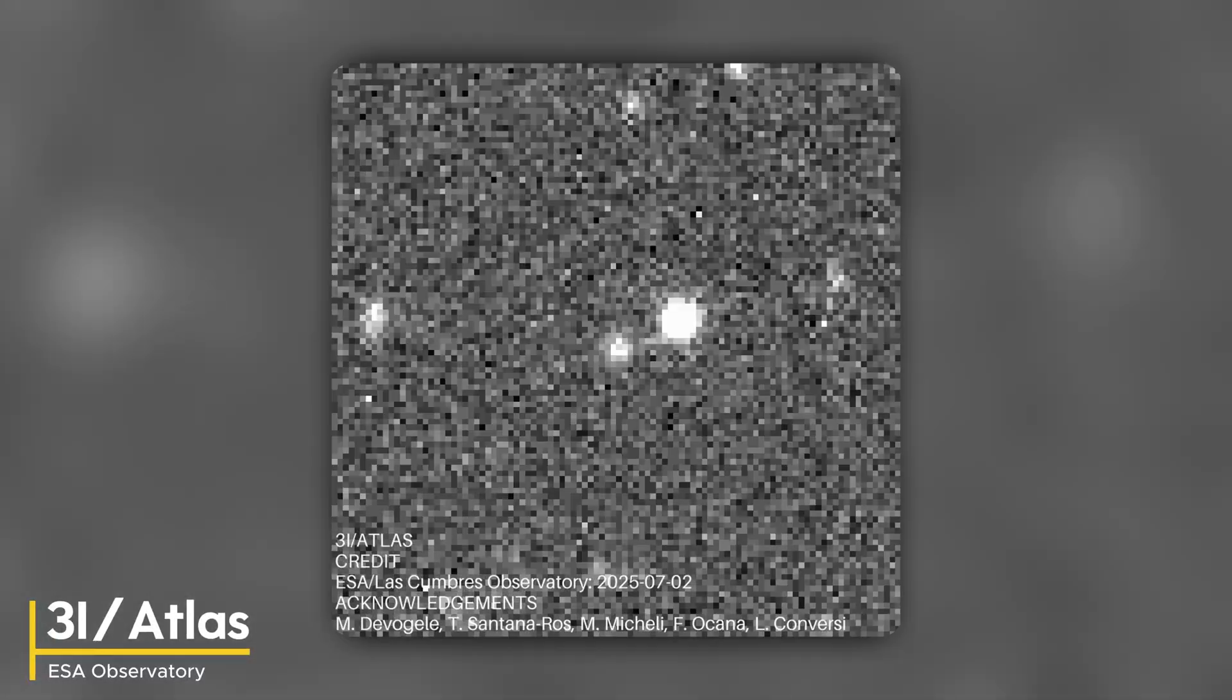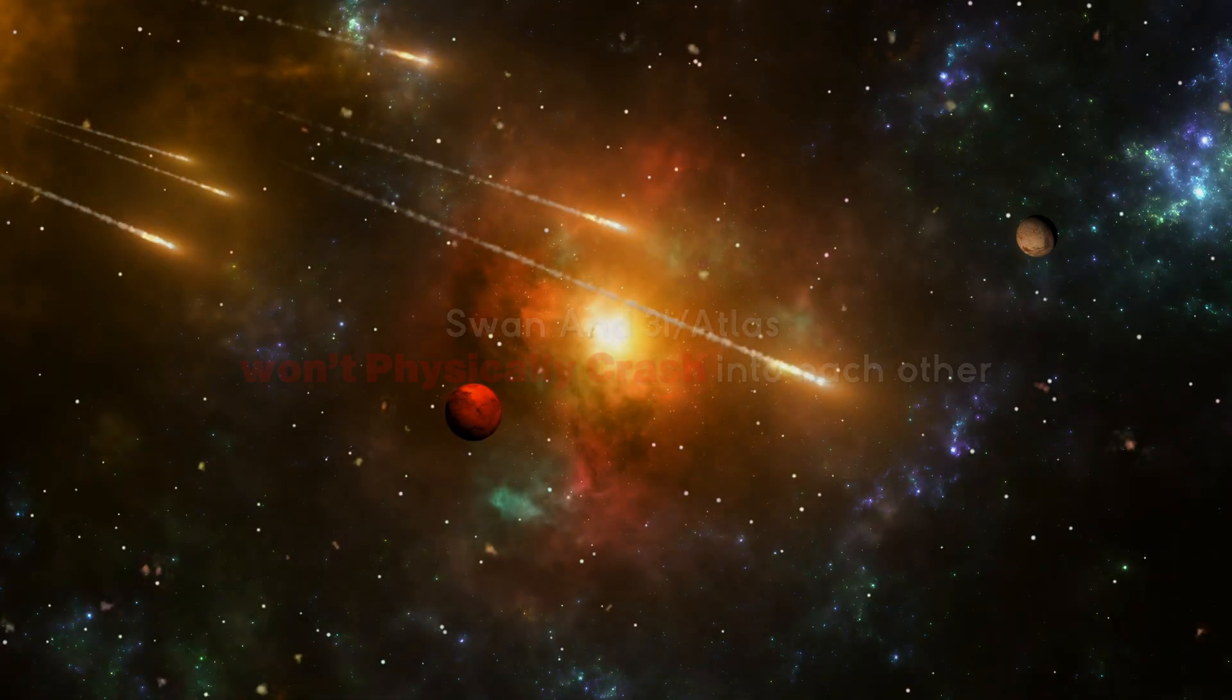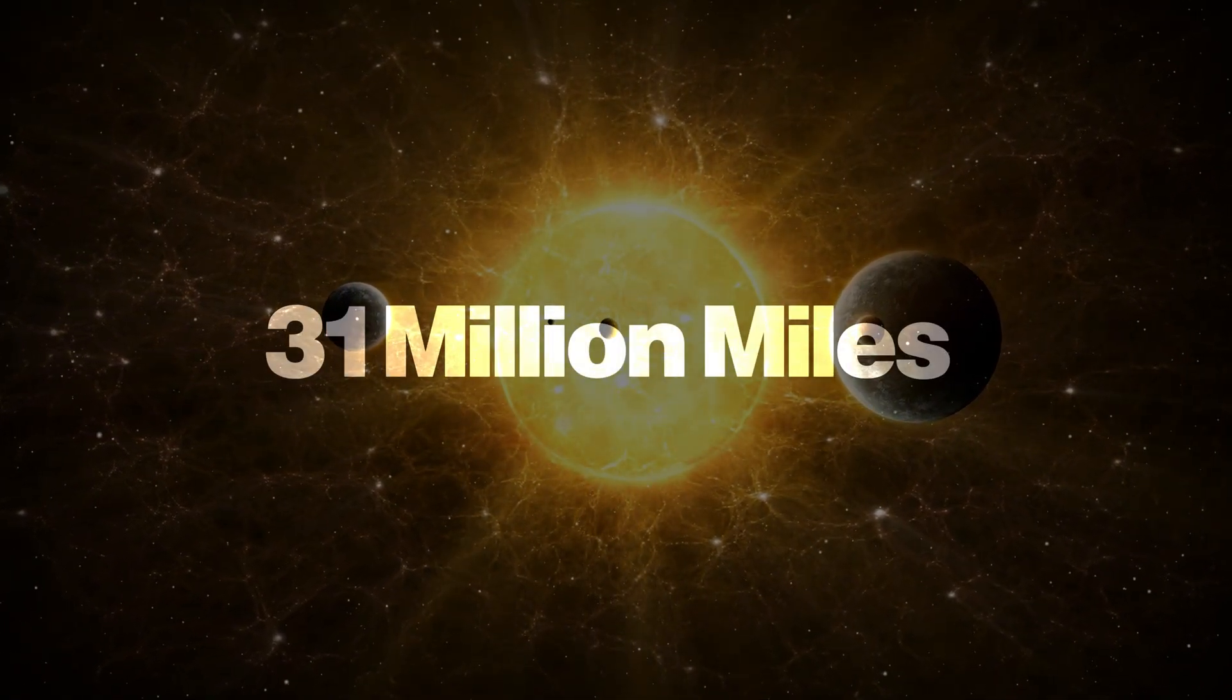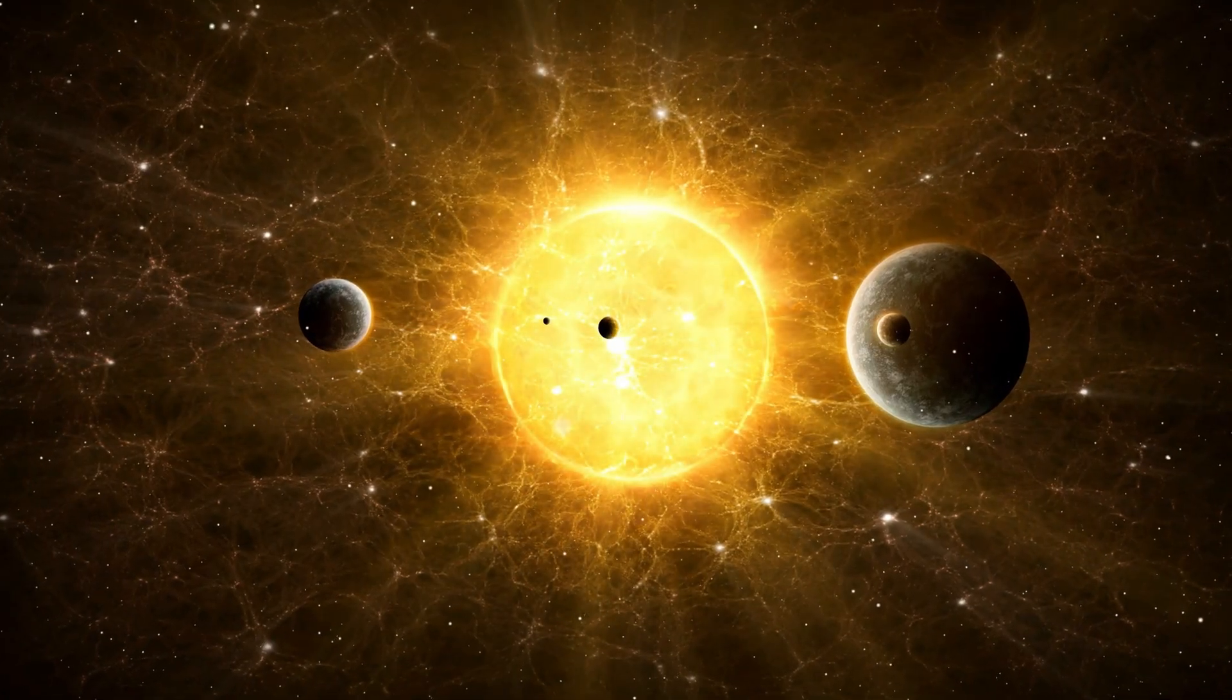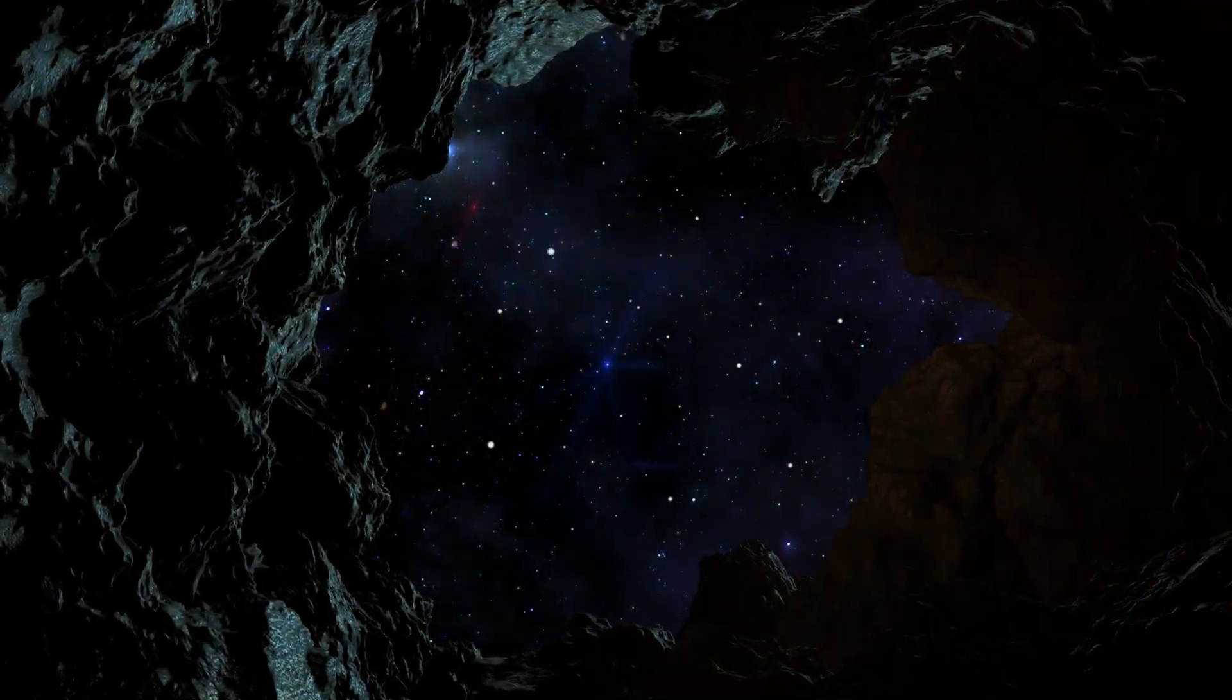Will these two mysterious visitors actually collide? The short answer is no. Swan and 3I Atlas won't physically crash into each other. But the reality is far more intriguing than a simple collision. These objects will pass within 31 million miles of each other, while both are hidden behind the sun, creating what scientists call a gravitational dance that could alter their trajectories forever.